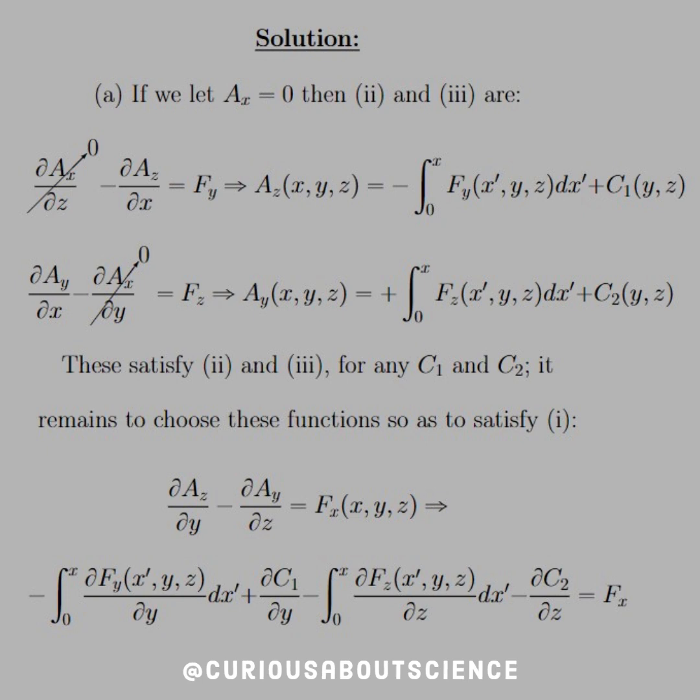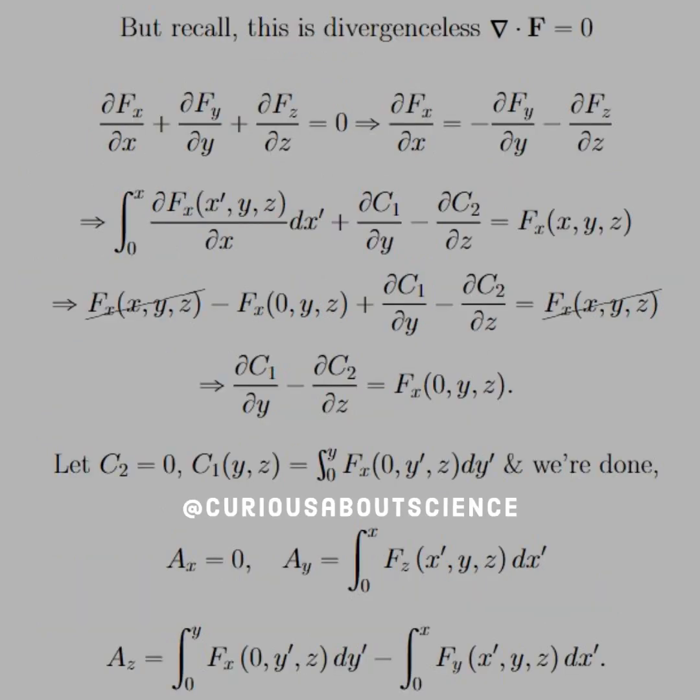We see we have negative integral partial y of the Fy component with respect to dx prime, plus the partial of its constant with respect to y, and for the second partial, the z partial of the z component of the field with respect to dx prime, minus the partial of C2 with respect to z. All of this equals the x component. Here's where we use our context. We know that this is divergenceless because the divergence of a curl is zero. So if we break this out in component form, partial x of Fx plus partial y of Fy plus partial z of Fz equals zero.